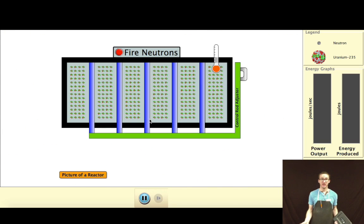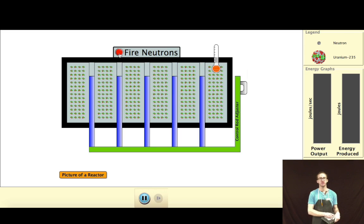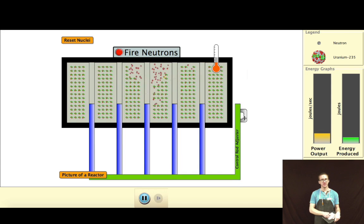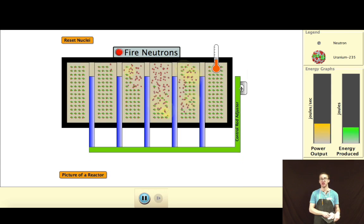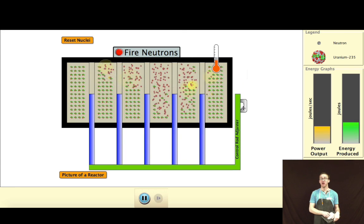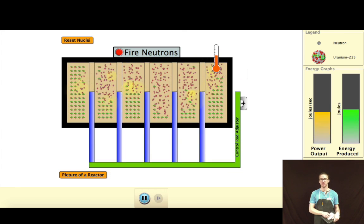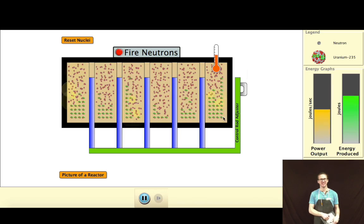Now, essentially, a controlled chain reaction is what we use in nuclear power plants. I'm gonna fire some neutrons here. And I can adjust, essentially, how those neutrons interact with others if I want to increase the power or decrease the power. Boom! Science!